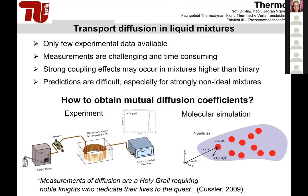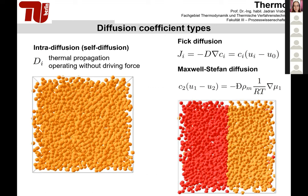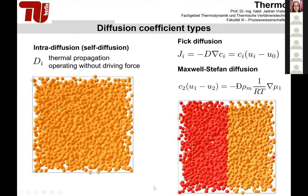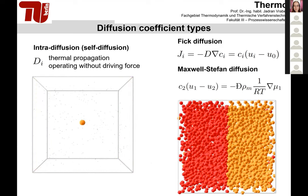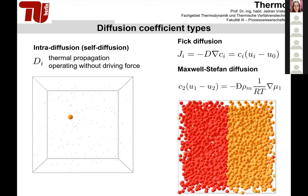Experimental work is quite difficult—as has been noted, it requires working for a long time in the lab to obtain such data. Another approach is molecular modeling and simulation, which is what I am going to talk about today. In the context of diffusion, one has to distinguish several different diffusion coefficient types. First, there are the so-called intra-diffusion coefficients, also called self-diffusion coefficients, which act also in pure fluids and describe the thermal propagation of a molecular species without any driving force.